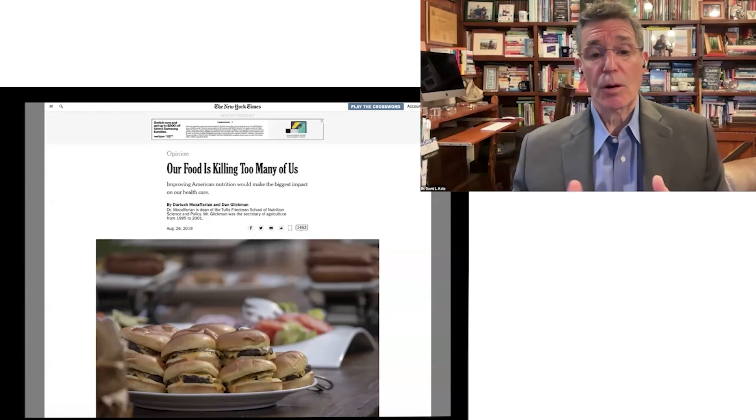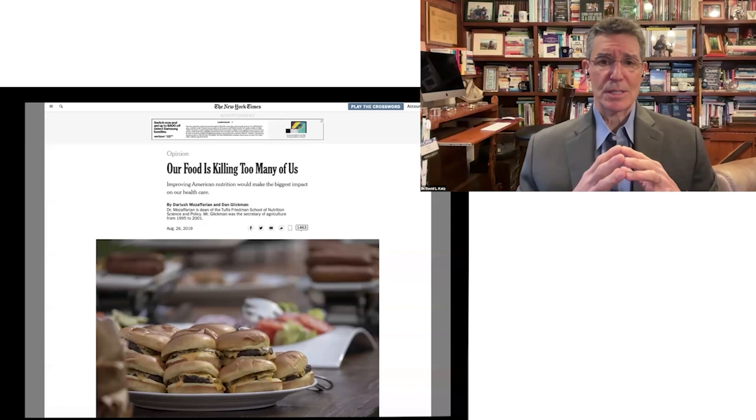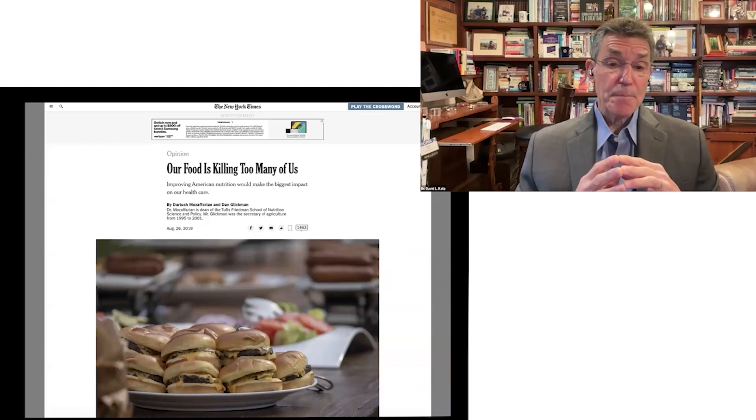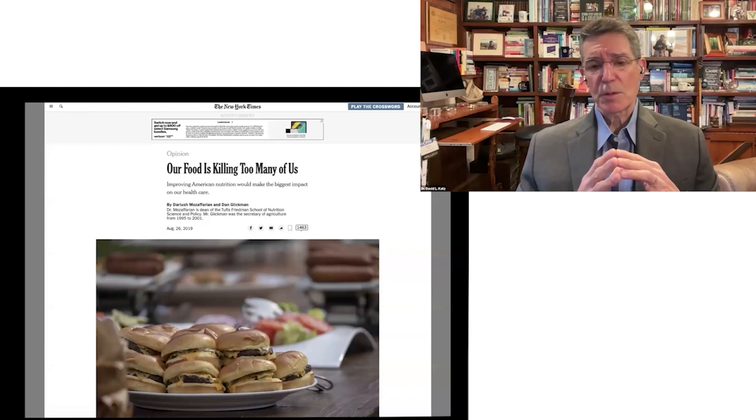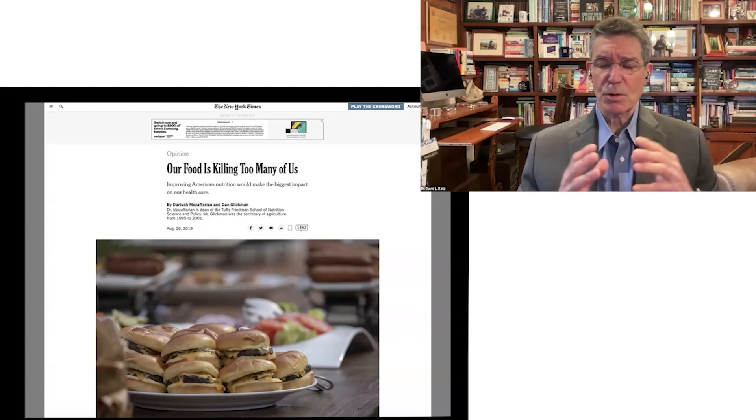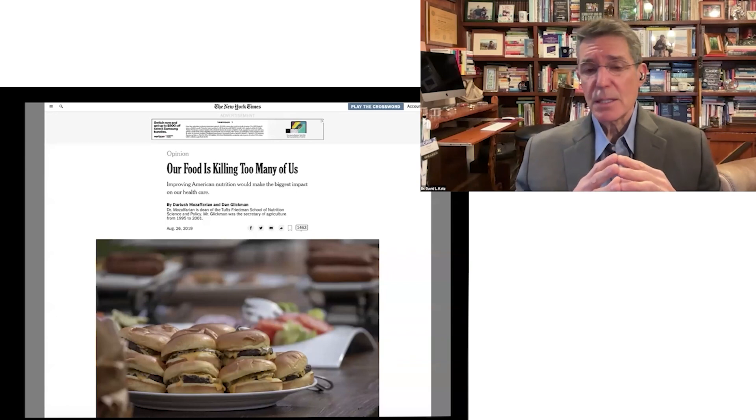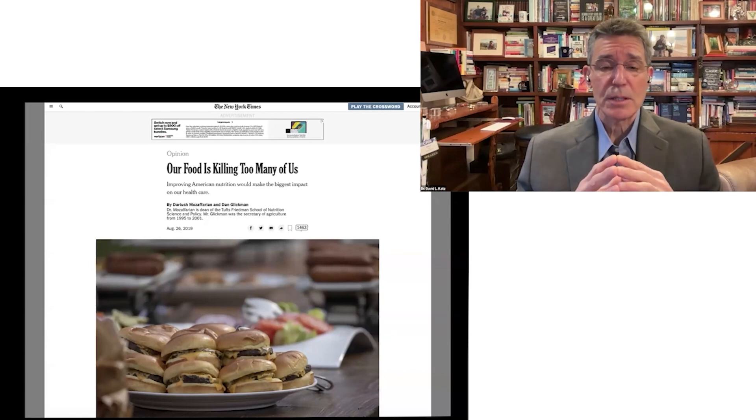When we take stock specifically of where are we now with food, the simple conclusion is it's killing too many of us. Food is killing too many. It's not hunger, not starvation. Our food is killing too many of us. This was an op-ed in the New York Times. Note the date here, August of 2019. Interesting timing because this was months before we were overwhelmed by SARS-CoV-2. And I'll return to the pandemic along the way here. But essentially, we already had a pandemic. That's what this op-ed was about. So this focused in particular on the US. It was written by the former Dean of Nutrition at Tufts and former Secretary of Agriculture of the United States.